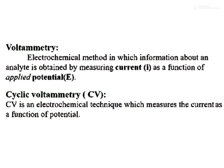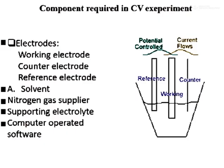In cyclic voltammetry, the same thing applies — it measures current as a function of potential — but it is cyclic, meaning repeating. These are the basic components required in cyclic voltammetry.